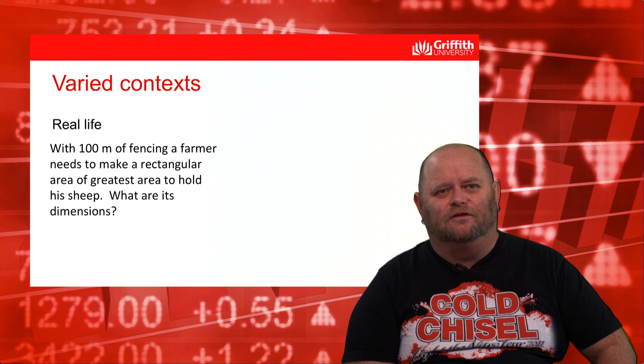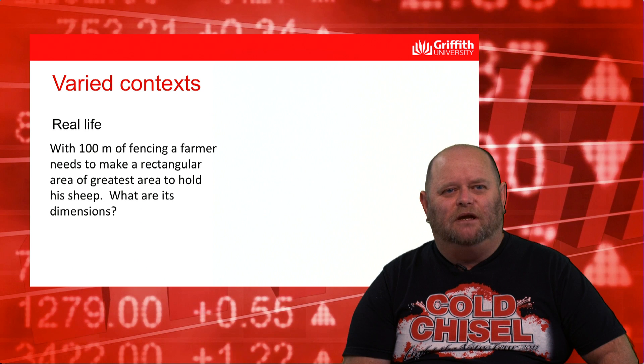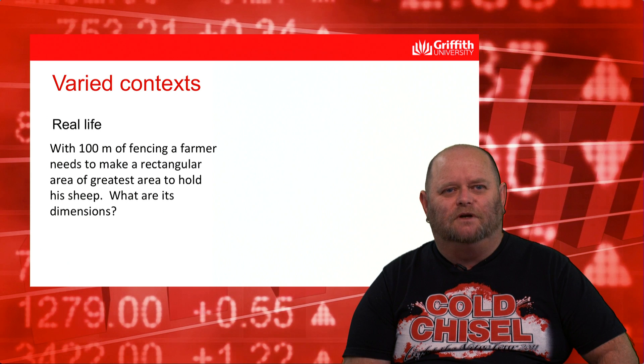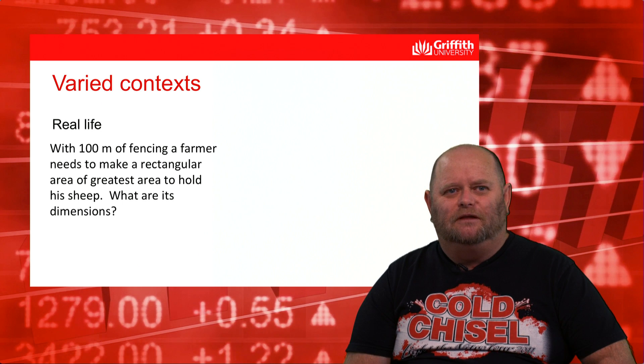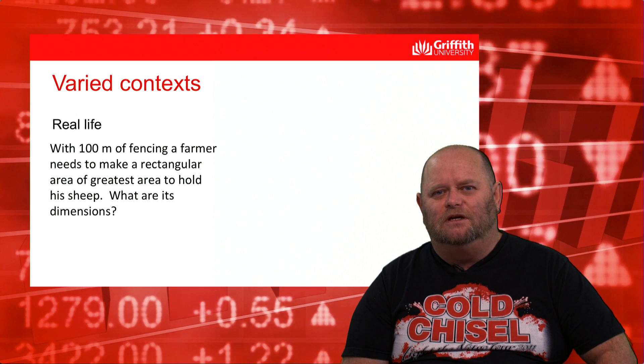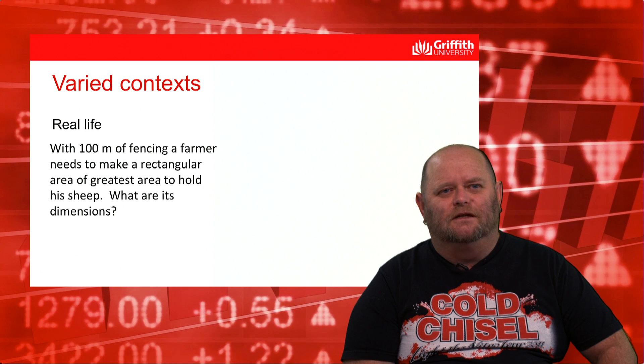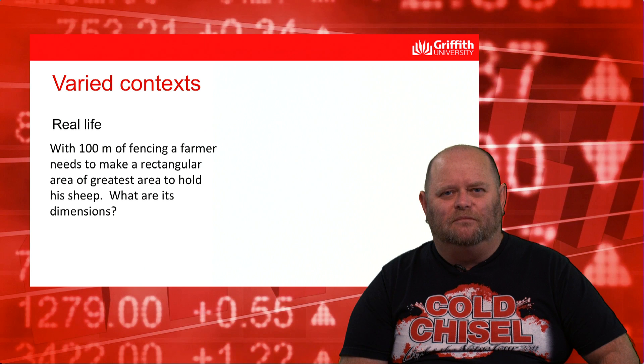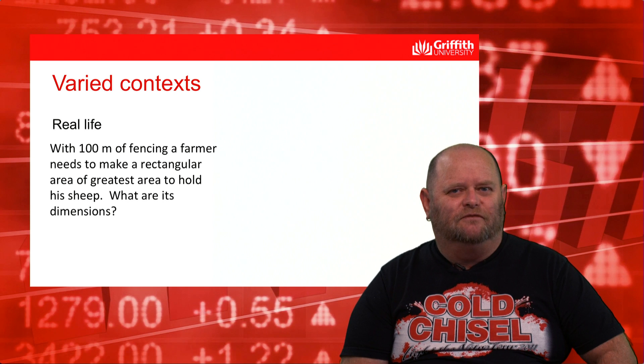What about a real life context? Certainly in my dealings of teaching out in the country many years ago, becoming engaged in the local community, I was able to spend some time with some sheep farmers. And I know around sheep shearing time, they'd have to get as many sheep into a temporary pen as possible so the shearers could come in and shear those sheep in an optimal fashion. So here's a real life situation. We've got 100 metres of fencing. The farmer's only going to make a rectangular pen to put his sheep into. What are the dimensions that's going to give us the greatest area?